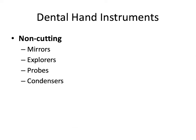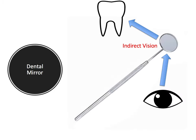Now let's talk about some specific non-cutting dental hand instruments, starting with the dental mirror. This small angled mirror allows you to see areas of the mouth that would otherwise be difficult or impossible to see — for example, the occlusal surfaces of the upper molars or lingual surfaces of the upper incisors. We call this ability to look at oral structures using the mirror indirect vision, as opposed to direct vision where your eyes look at the tooth or structure directly.